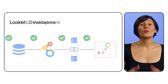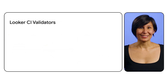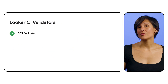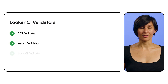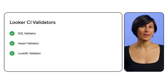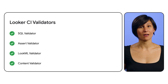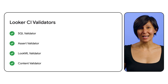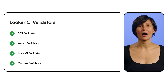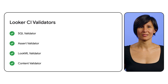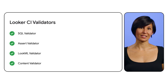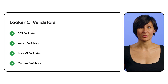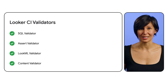There are four validators in a Looker CI suite: the SQL validator, the assert validator, the LookML validator, and the content validator. These help protect you from upstream changes and check your syntax, alerting you to disruptions and content downstream.